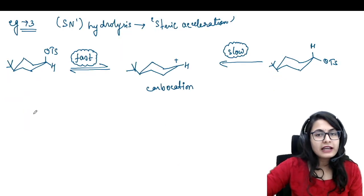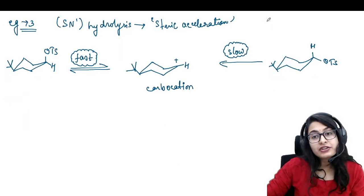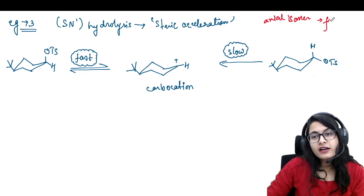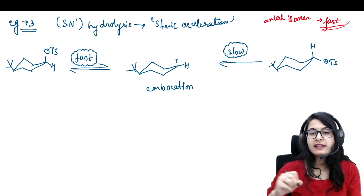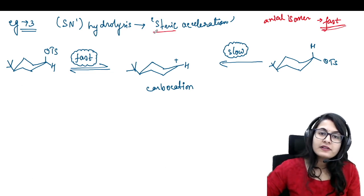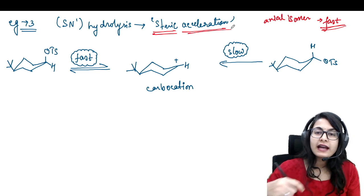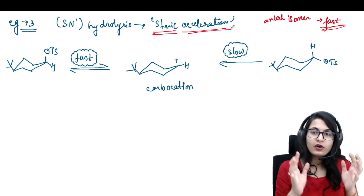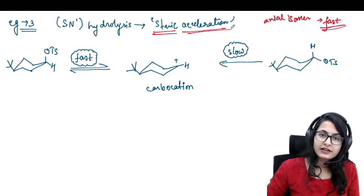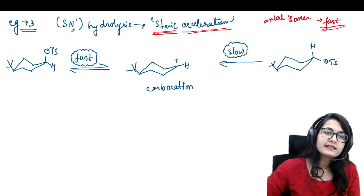Now sometimes it also happens that the axial isomer is reacting fast. When does that happen? That happens and we call it steric acceleration — that is, because of bulk we are getting a faster reaction. That is steric acceleration.